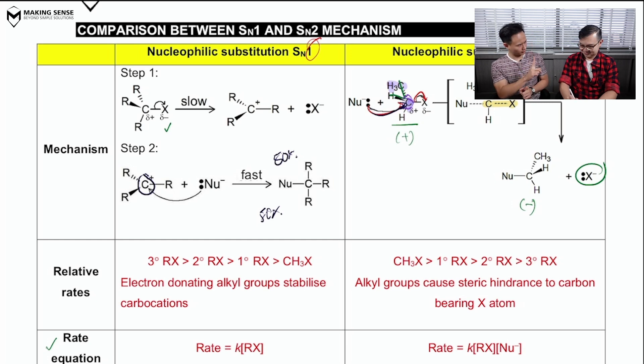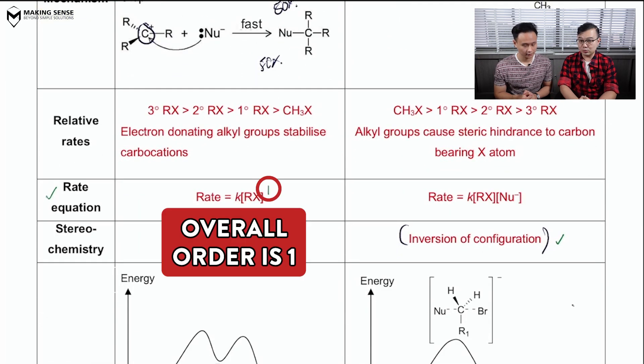One molecule in the slow step, one, overall order one? That's right. So it corresponds to SN1, and more importantly, the rate equation, overall order is one as well. Now,